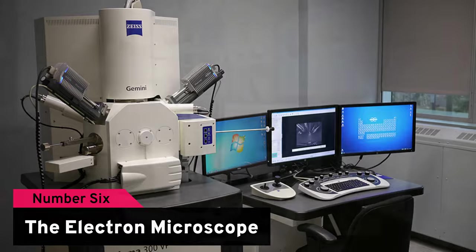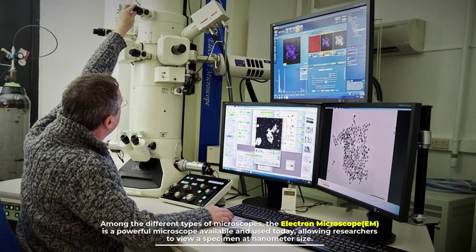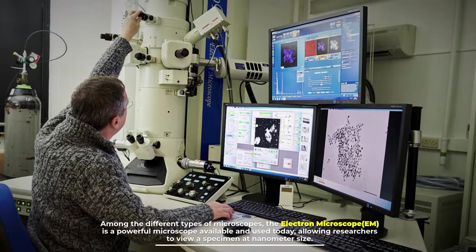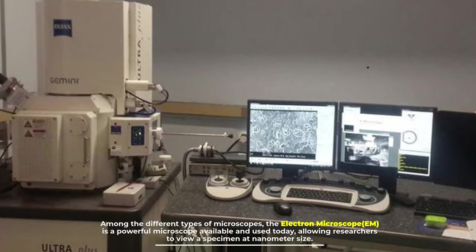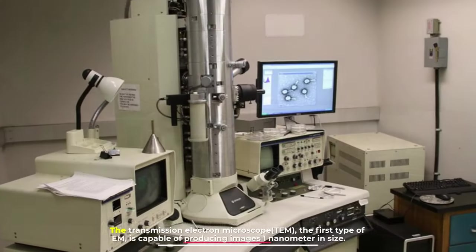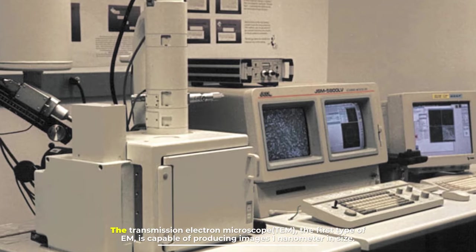Number six: the electron microscope. Among the different types of microscopes, the electron microscope (EM) is a powerful microscope available and used today, allowing researchers to view specimens at nanometer size. The transmission electron microscope (TEM), the first type of EM,